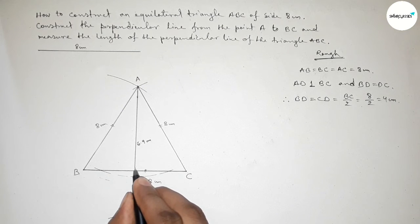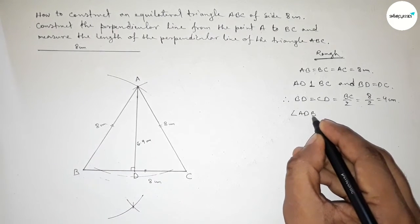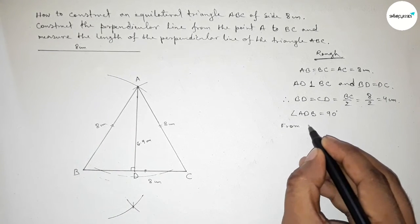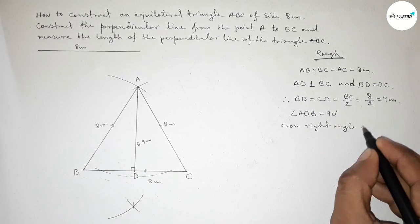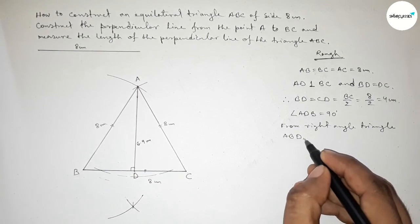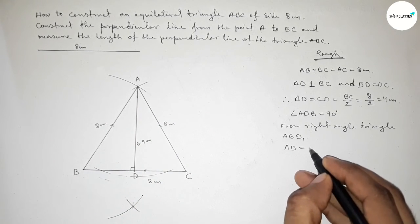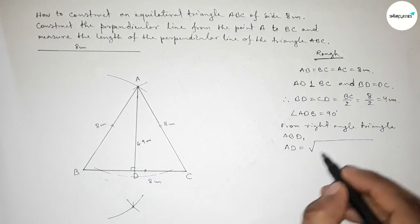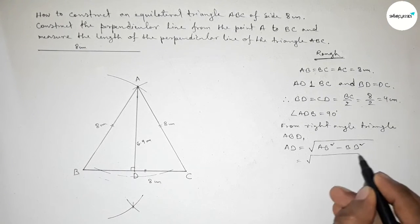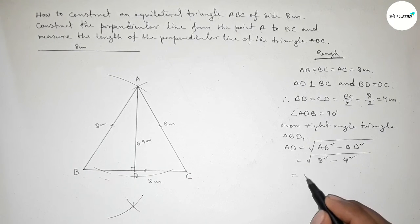Here we get 90 degrees, so angle ADB equals 90 degrees. From right angle triangle ADB, by Pythagoras theorem, we can write the perpendicular line AD equals root over hypotenuse squared minus base squared, so AB squared minus BD squared. Putting the values: 8 squared minus 4 squared.